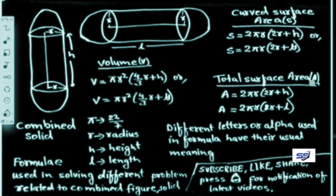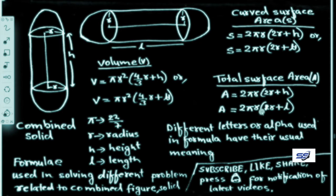Total surface area for the double-hemisphere figure: A = 2πR(2R + H), or equivalently A = 2πR(2R + L). In this formula, π = 22/7, R is radius, H is height, and L is length.